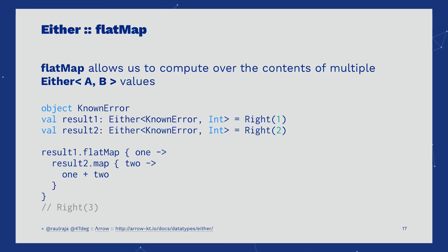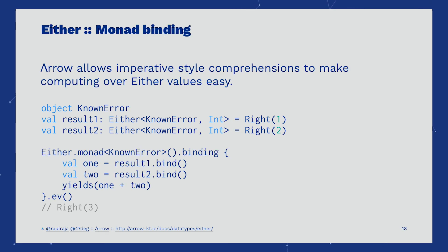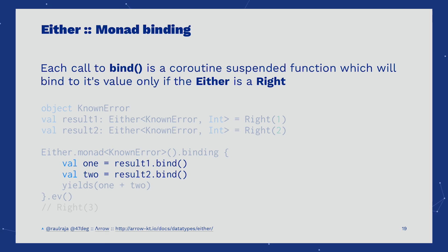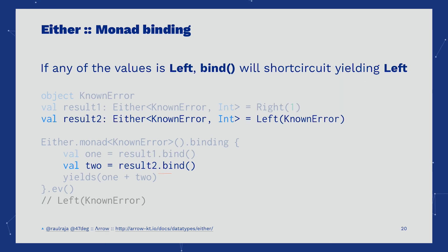If we have multiple Either values and we want to compute sequentially over the right case, we use flatMap. FlatMap, in the same way as map, is right-biased. Instead of dealing with multiple nested flatMaps, an easier solution is to use Arrow's built-in monad comprehension. The Either monad allows us to bind over Either results and bind their values to the right case. Once we have all the values unbound, we can add them up or do whatever transformation we wish in an imperative fashion. Bind is a suspended function in the Kotlin coroutine system — when we invoke bind, we delegate the chain call to flatMap, allowing us to avoid nested flatMap chains. If we bind over a left value, the computation will short-circuit, yielding the left case.